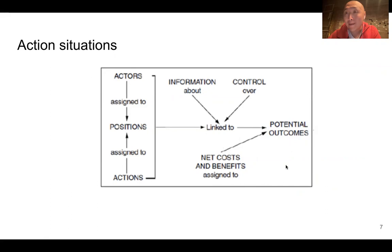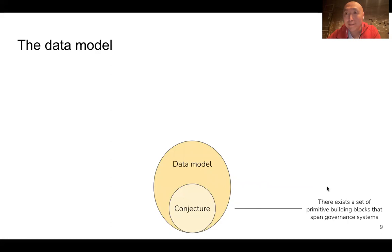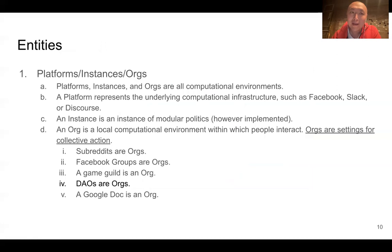This is already a kind of modular architecture, and it supports modifications to those modules via things like boundary rules for actors, position rules for positions, scope rules for potential outcomes, and so on. This is important because it's going to be useful for defining the data model that we are working on and trying to apply in an online setting.